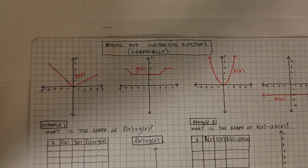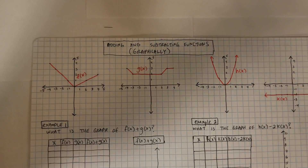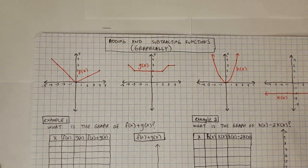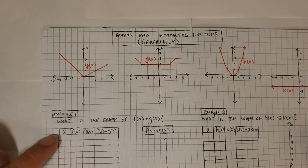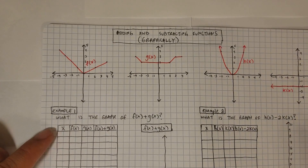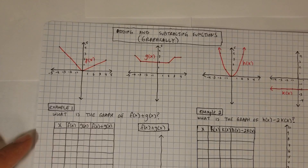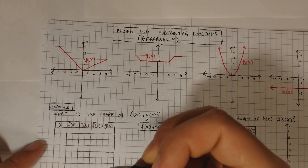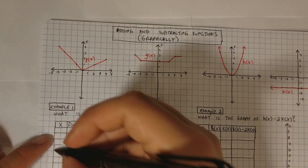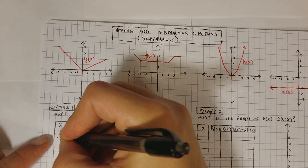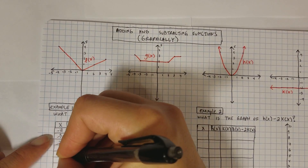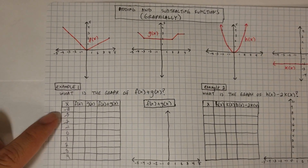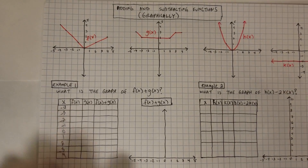I already have my table pre-made to save time. The table covers the domain of each graph, which in this case is going from negative 4 to positive 4. That should cover all my bases for the graph. So filling in my table from negative 4 to positive 4, I have: negative 4, negative 3, negative 2, negative 1, 0, 1, 2, 3, 4. This is my domain for f(x) and g(x).